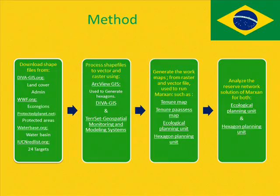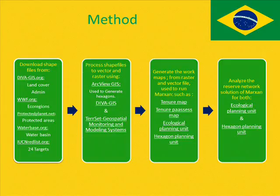This was conducted by downloading shapefiles from associated websites. Land cover and abundance shapefiles were downloaded from gbgis.org. The ecoregions used for the tenure maps were downloaded from www.if.org. The protected areas were downloaded from protectedplanet.net. The water basins were downloaded from autobase.org, and the 24 targets were downloaded from the iucn-wetlist.org.